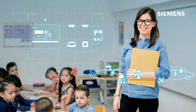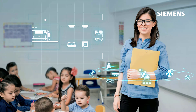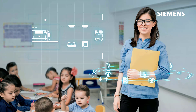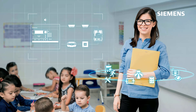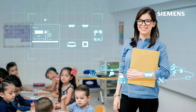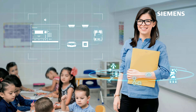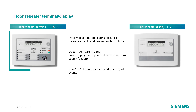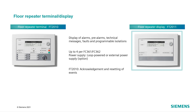Hello and welcome. In this video, we will explain how to program the flow repeater terminal and the flow repeater display on the Cerberus Fit FC360 fire panel. The flow repeater terminals and flow repeater displays are used to simplify displaying and operating the fire protection system across the coverage area.